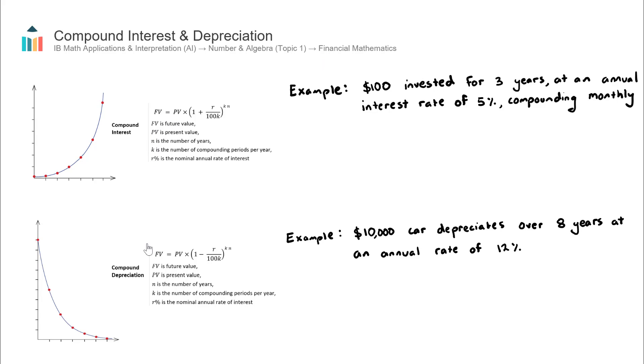Compound interest and compound depreciation are very similar concepts, but also kind of the opposite, as you can see here by the shape of their respective graphs. You are given the formula for compound interest in the AI formula booklet, but you aren't given the formula for compound depreciation. The only difference is that the compound depreciation formula has a subtraction inside the bracket, as opposed to compound interest, which has an addition.